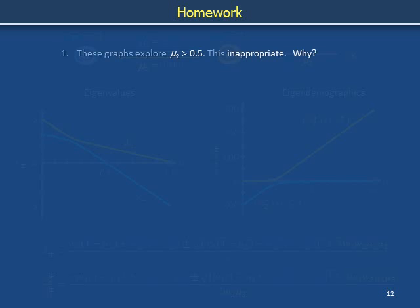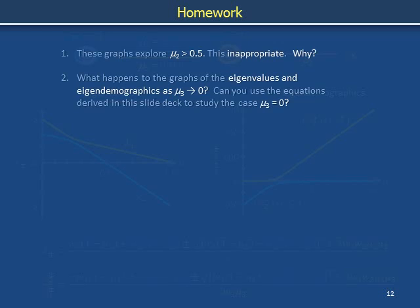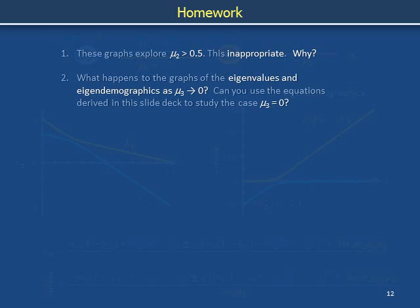Why is it inappropriate to consider values of mutation fraction mu2 greater than 0.5? What happens when mu3, the fraction of back mutation from orange to blue cells, vanishes? Can you use the analysis in this slide deck to study that case?